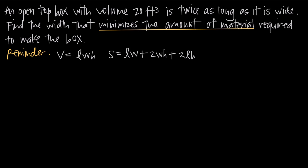The surface area of an open top box is: length times width, plus two times width times height, plus two times length times height. For a regular box, the bottom and the top have the same surface area. Two times length times width accounts for top and bottom; two times width times height accounts for front and back; two times length times height accounts for left and right. Since there's no top, we only include the base once — not multiplied by two.